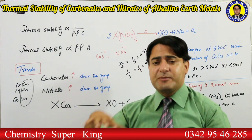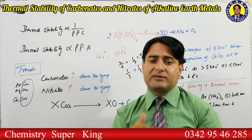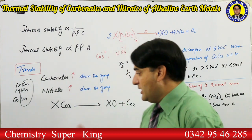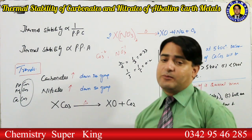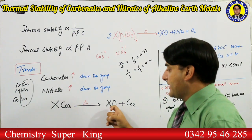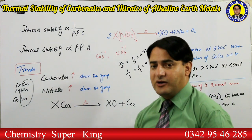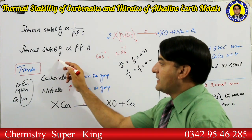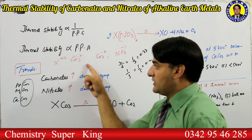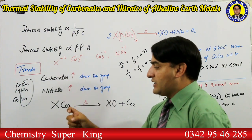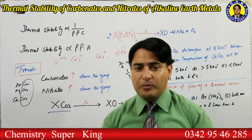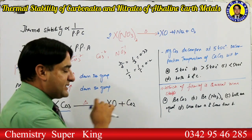I have discussed this in detail in the alkaline metal thermal stability of carbonate, bicarbonate, and nitrate video — you can go watch that. Now remember: all carbonates of alkaline earth metal are thermally unstable. When heated, they produce the corresponding oxide and carbon dioxide. The alkaline earth metal has valency +2 and carbonate has valency -2, so the general formula is XCO3. When heated, XCO3 gives X oxide plus carbon dioxide — for example, calcium carbonate gives calcium oxide plus carbon dioxide.